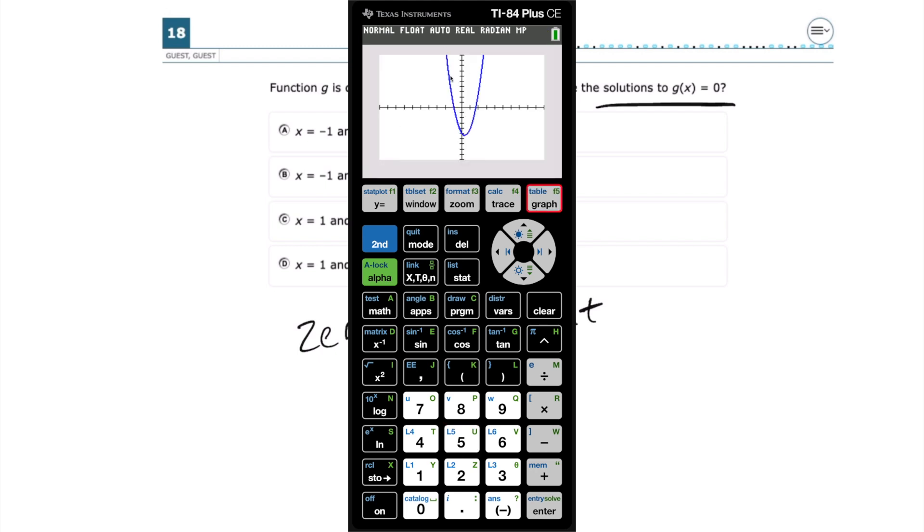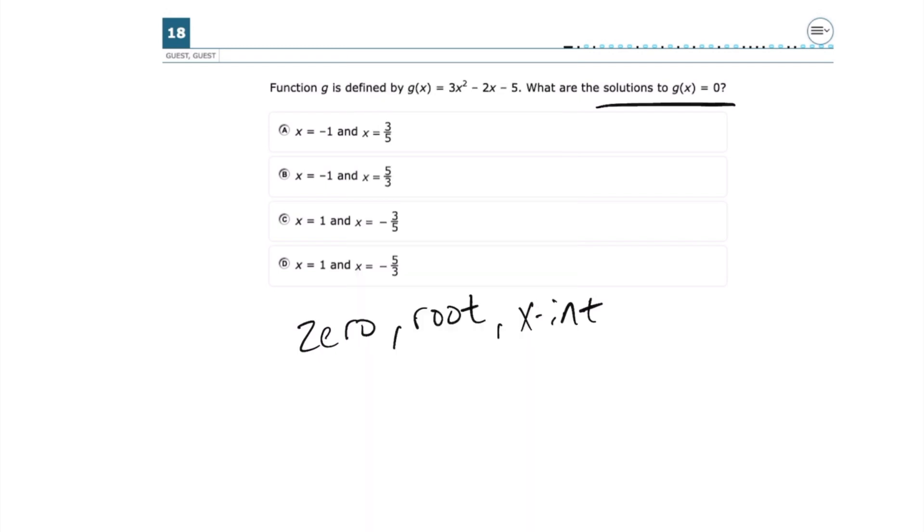And so right away, I can tell for sure that we have an x-intercept at negative 1. So I know that letter A and letter B are looking good. Letter C and letter D, we can go ahead and eliminate.